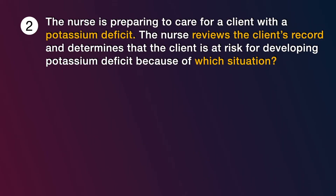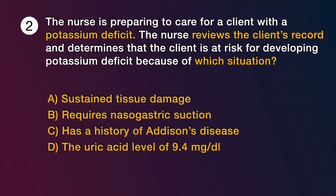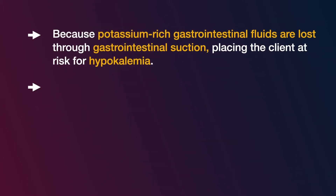Question number 2: The nurse is preparing to care for a client with a potassium deficit. The nurse reviews the client's record and determines that the client is at risk for developing potassium deficit because of which situation? Options are: A) sustained tissue damage, B) requires nasogastric suction, C) has a history of Addison's disease, D) uric acid level of 9.4 mg per deciliter. The answer is B, requires nasogastric suction, because potassium-rich gastrointestinal fluids are lost through gastrointestinal suction, placing the client at risk for hypokalemia.